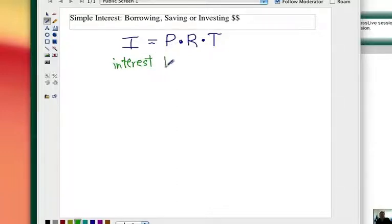P is the principal, and that just means the chunk of money that you are dealing with at the beginning. R is the rate. In a standard formula like this, this is the interest rate per year. At the end of one year, what's the interest rate? And T is always in terms of time, and it's in years.